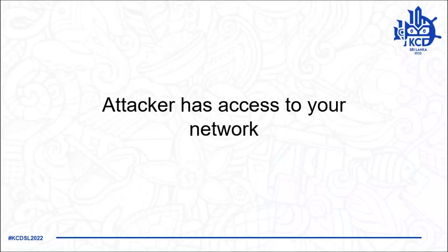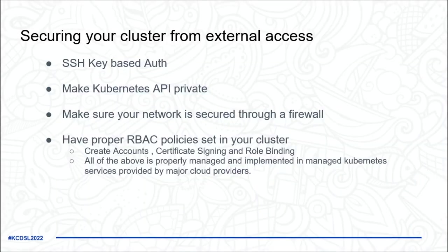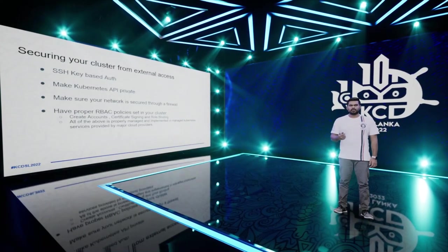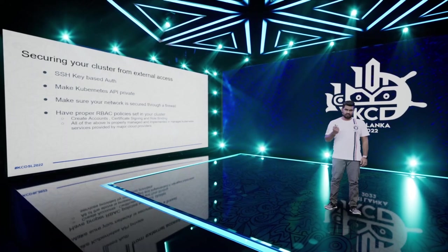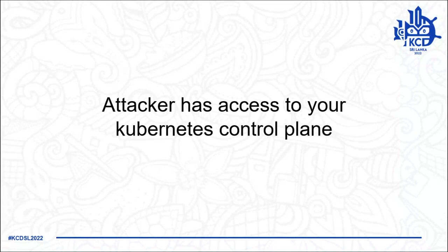The first scenario: an attacker has access to your network. If you're using cloud, you can use SSH-based key auth, make your Kubernetes API private to avoid attackers discovering it, use a firewall to secure your network, and implement proper RBAC policies in your cloud and in your cluster.